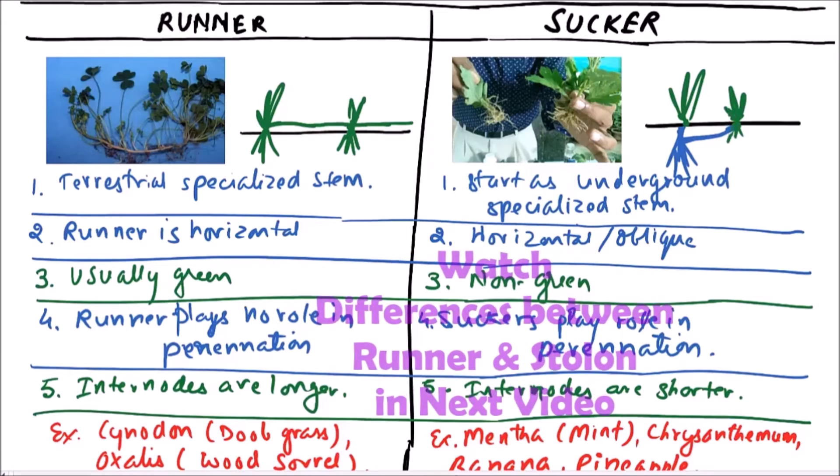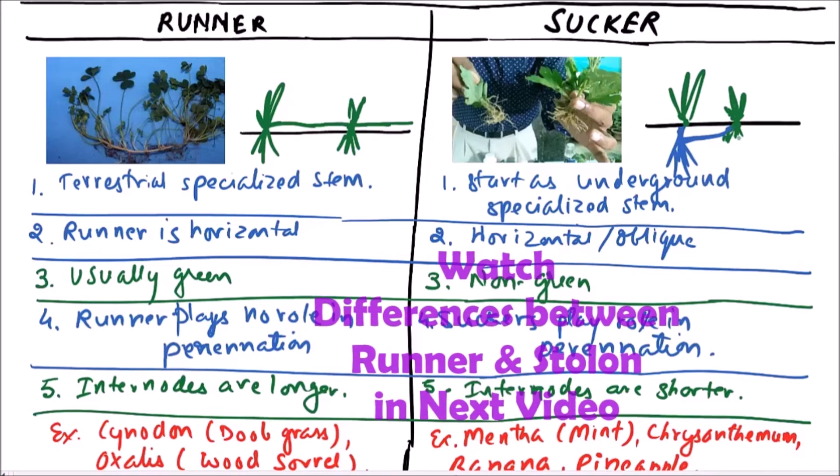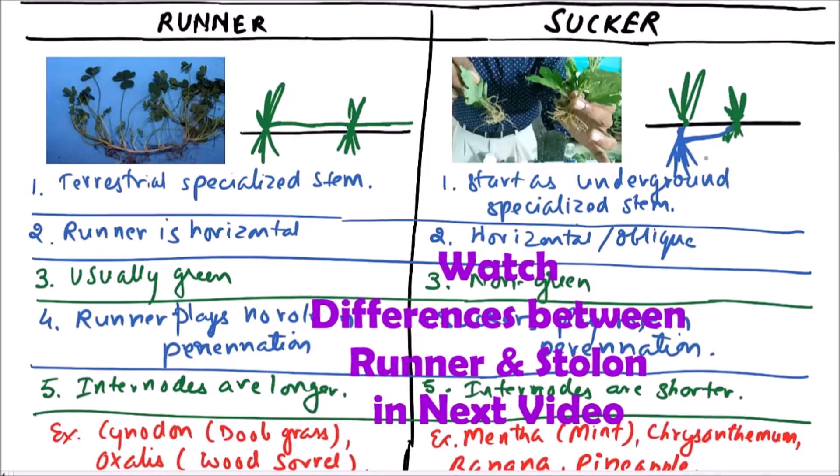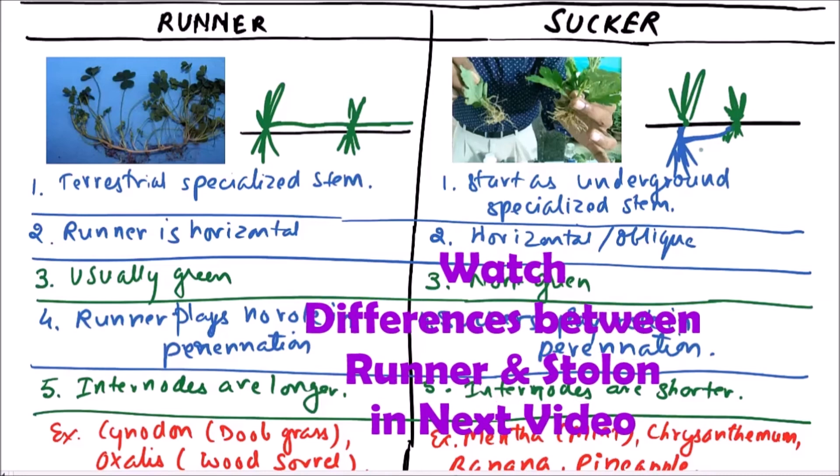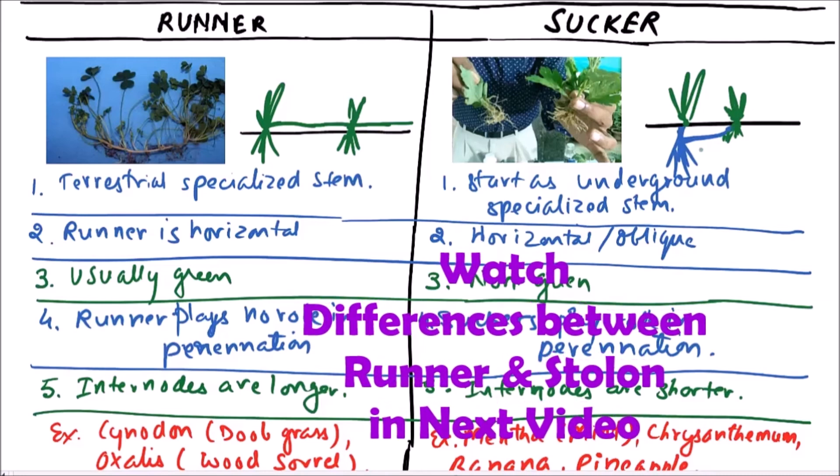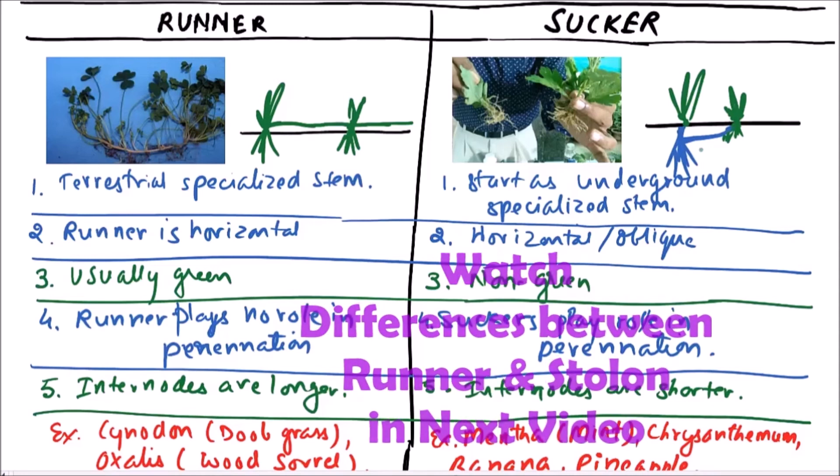And give rise to roots and shoots. So in this case, internodes are relatively shorter. So these are the various points of differences between runners and suckers.